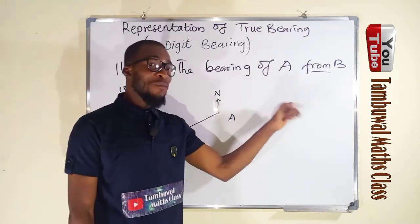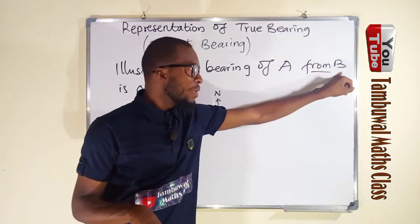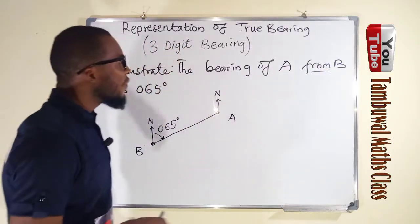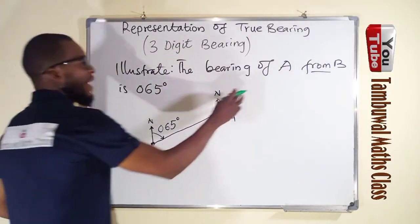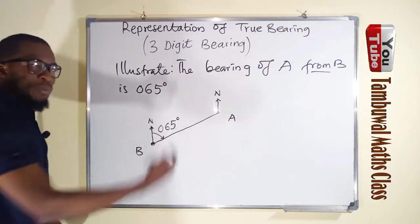I told you the bearing of A from B is entirely different from the bearing of B from A. So how can we find the bearing of B from A if this is the bearing of A from B?